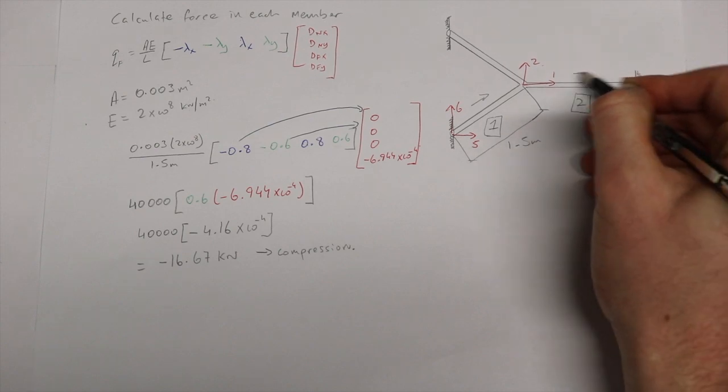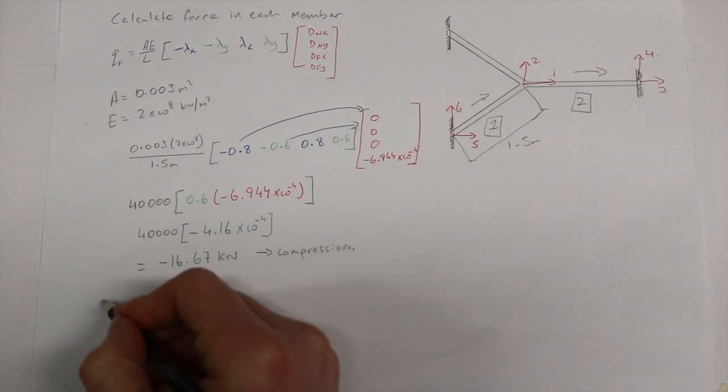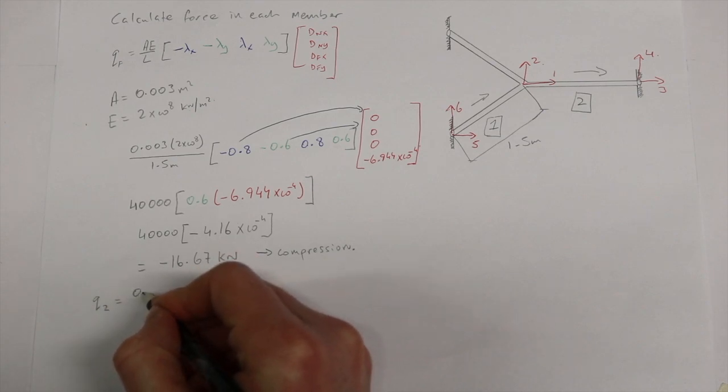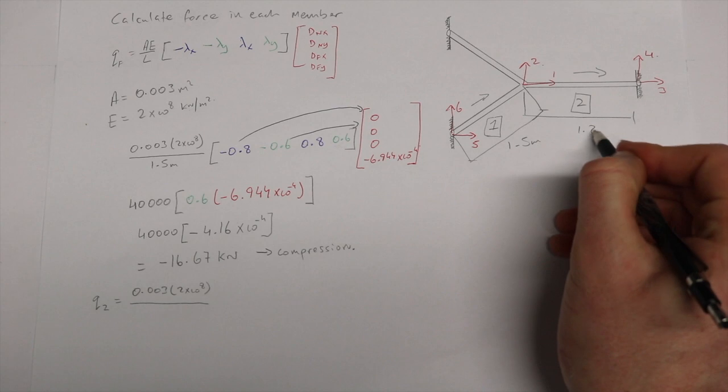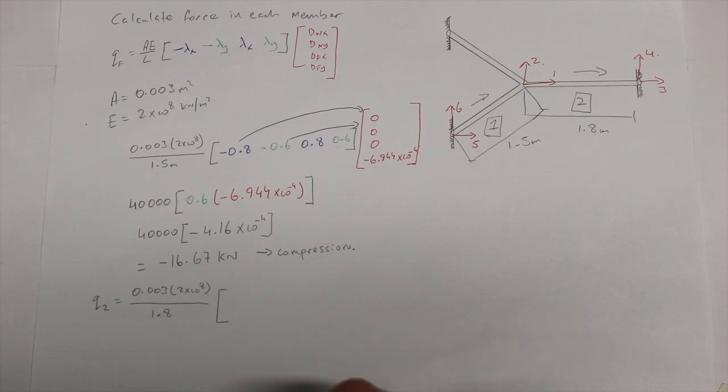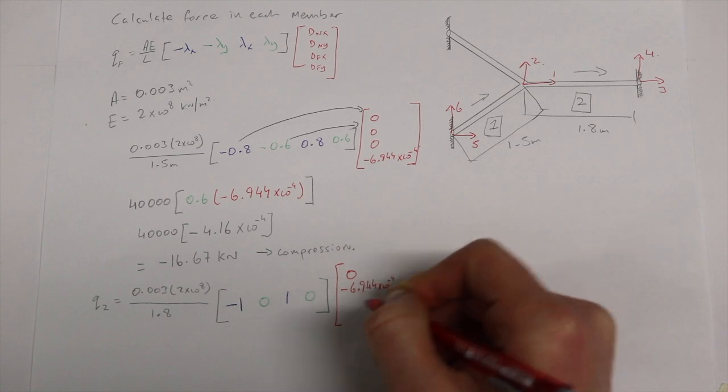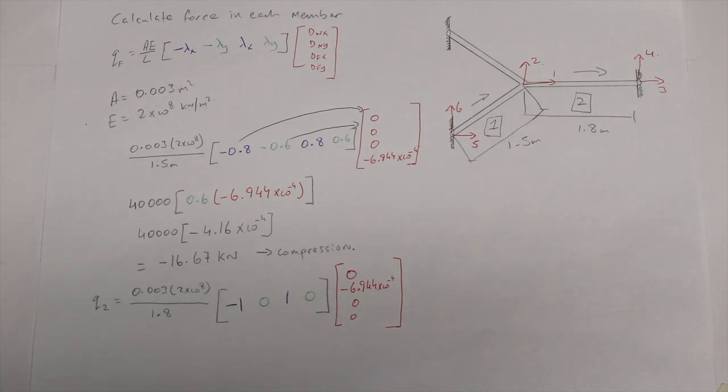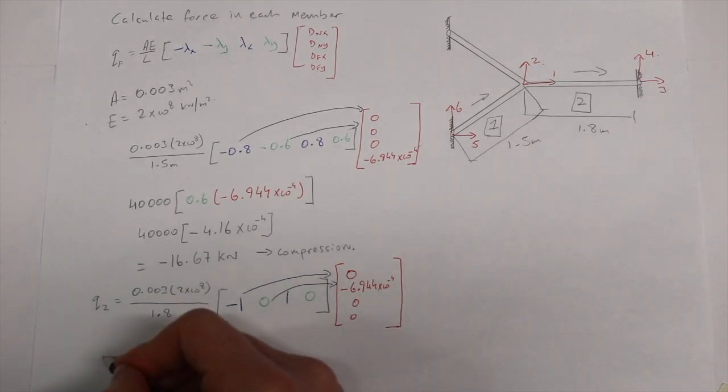Now we repeat this procedure for member 2 with labelling our near and far ends again and our degrees of freedom 1 and 2, 3 and 4. So our q2 equals the same, 0.003 by 2 by 10 to the 8. Our length this time is 1.8 meters. Multiply again by our minus lambda x, minus lambda y, lambda x and lambda y, which are minus 1, 0, 1 and 0. Our near y displacement labelled number 2 is the only displacement not equal to 0 in this. Therefore we multiply minus 1 by 0, 0 by minus 6.944, 1 by 0 and 0 by 0. Therefore our q2, our force in member 2 is equal to 0.